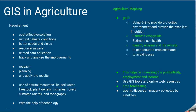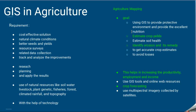To get accurate crop estimates and avoid losses, we need agriculture mapping. Agriculture mapping using GIS is very good for productivity — it also provides employment and increases the income of farmers.